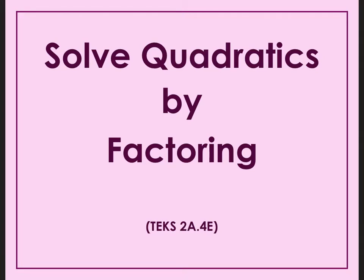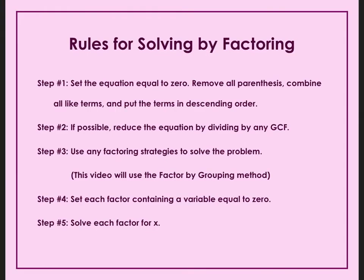This is Teeks from Algebra 2 for E. Some of the rules to solving by factoring — and I would highly suggest writing these down — is step one: we are going to set the equation equal to zero. That means we're going to get rid of all parentheses, combine all like terms, and put them in descending order, which means x squared, then x, then the number.